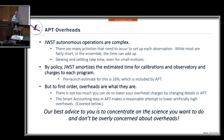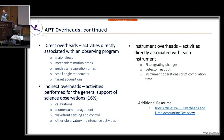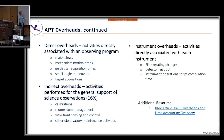Some terminology: direct overheads include slews and mechanism motion times — mostly deterministic values, though major slews must be calculated statistically. Indirect overheads are the observatory overheads like momentum management and calibration. Each instrument also has its own set of overhead times specific to that instrument.